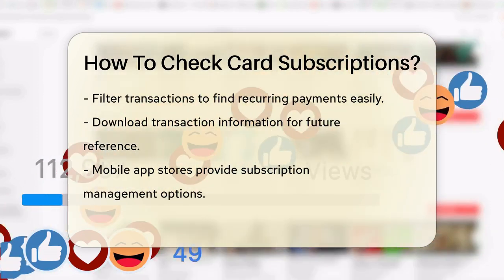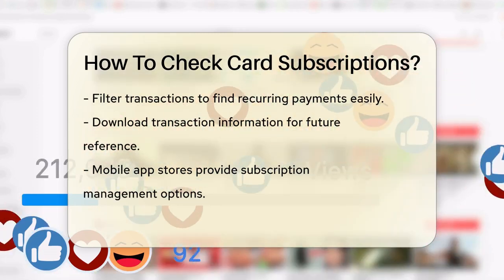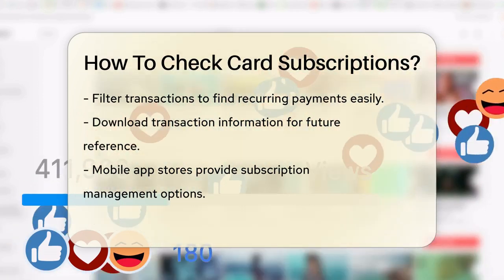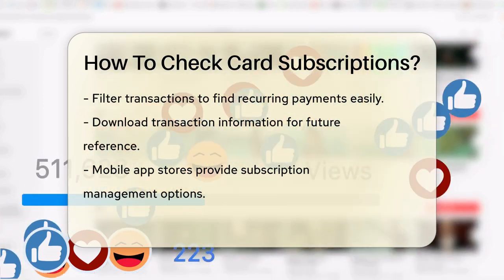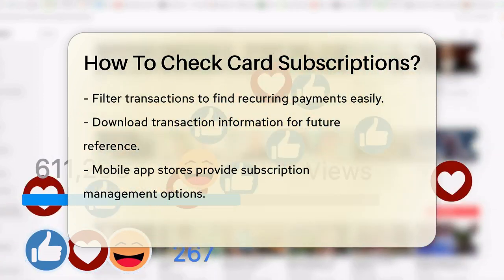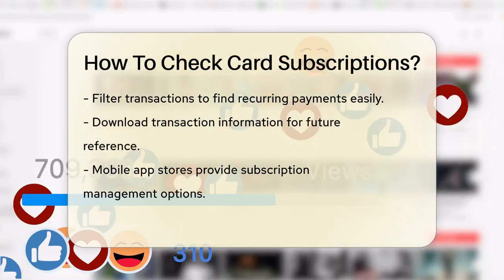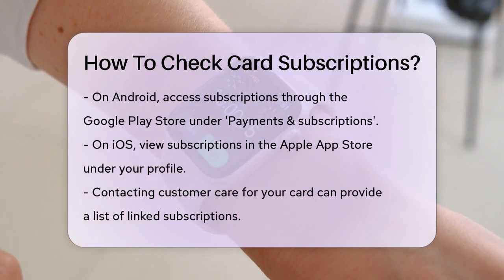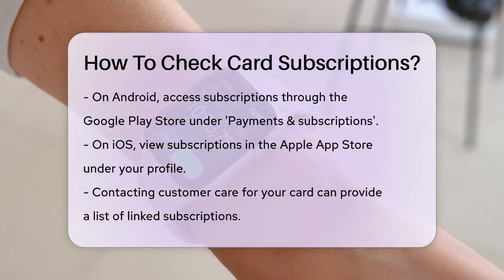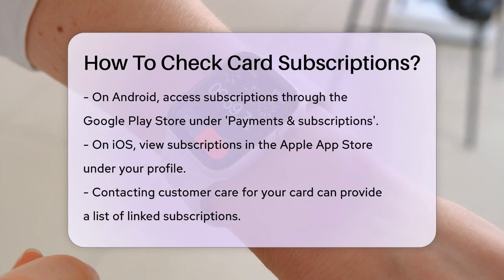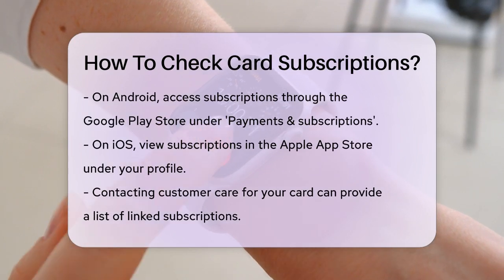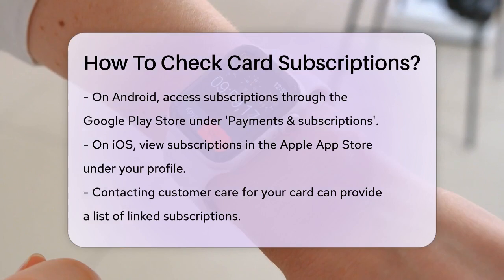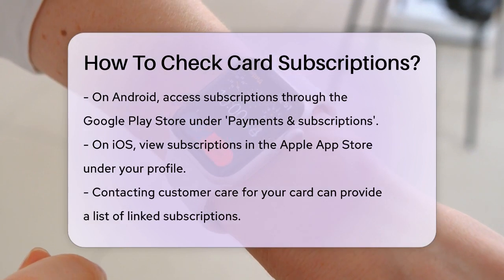If you've added your card as a payment method on your mobile device, you can also check your subscriptions through the app stores. On Android, open the Google Play Store, go to your profile photo, then select payments and subscriptions to see all your active subscriptions. On iOS, launch the Apple App Store, tap your initials or profile photo, and go to subscriptions to view and manage your subscriptions.